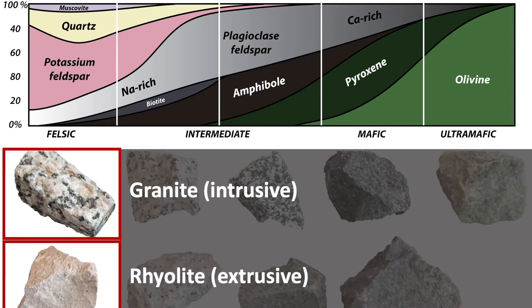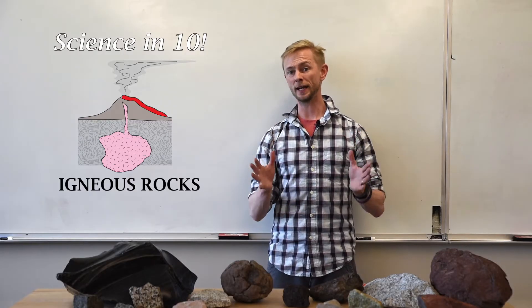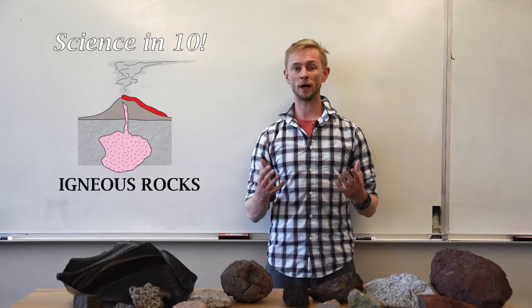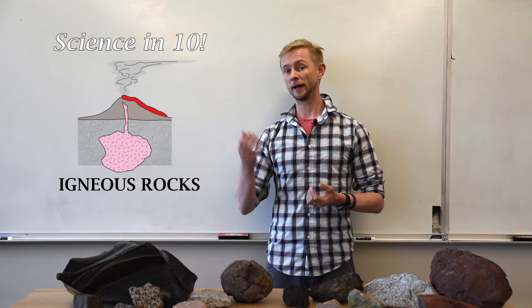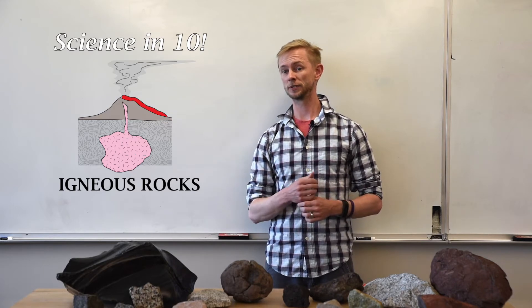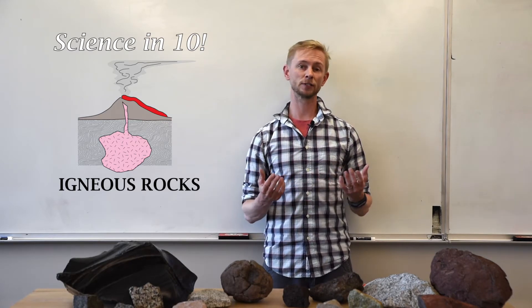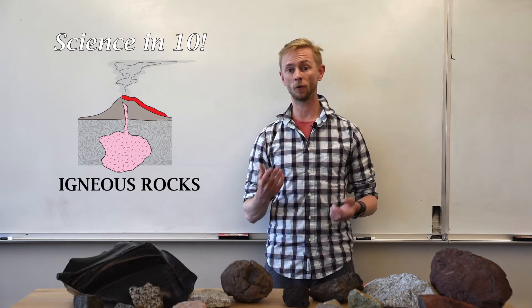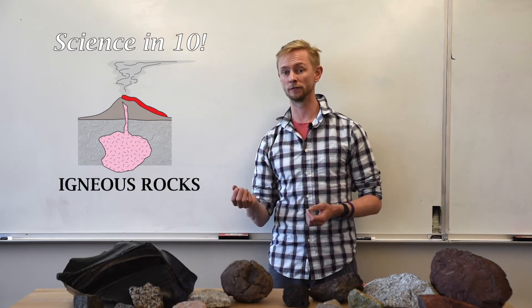Granites and rhyolites are the felsic end of the composition spectrum. These rocks are primarily quartz, potassium feldspar, sodium-rich plagioclase feldspar, and minor amounts of mica and hornblende. The specific names given to rocks of mafic, intermediate, and felsic compositions are based on whether a rock is intrusive or extrusive.